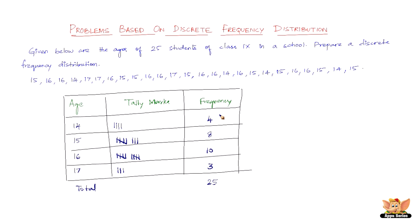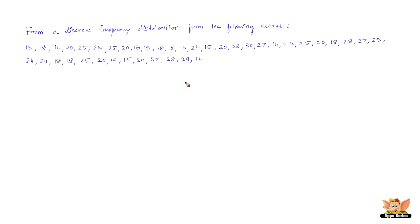Let us quickly solve another similar problem. Here we have another question: form a discrete frequency distribution from the following scores. Let us write the first column as variate, because it is varying — these are just scores, not a specific subject like age. Then we've got tally marks, and then frequency. The variate values range from the lowest, 15, to the highest, 30; in between we have 15, 16, 18, 20, 24, 25, 27, 28, 29, and 30. Let us list them in ascending order.